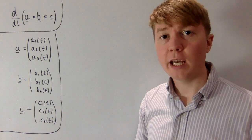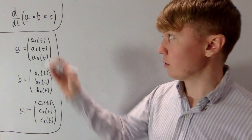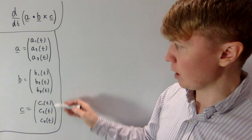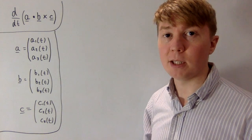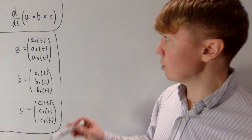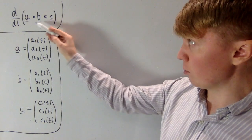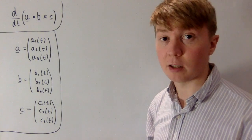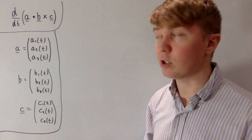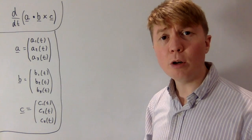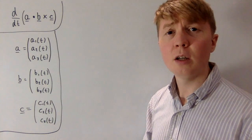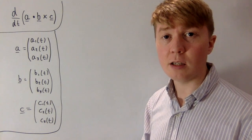We're going to look at differentiating the scalar triple product of three vectors — vectors a, b, and c. These are all 3D vectors which depend on some parameter t, and we're going to differentiate with respect to t. One way would be to evaluate the scalar triple product directly and then differentiate, but the approach we're taking is slightly different: we'll split this into smaller steps which will lead to a nicer answer.